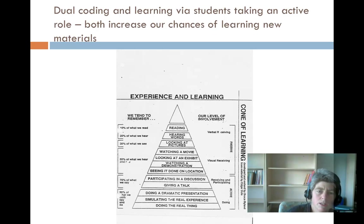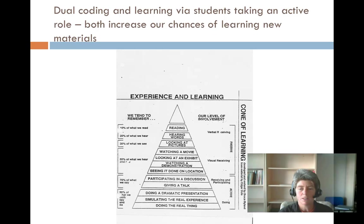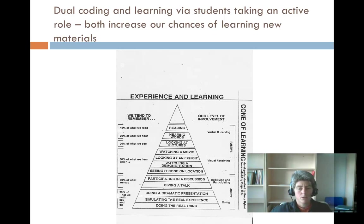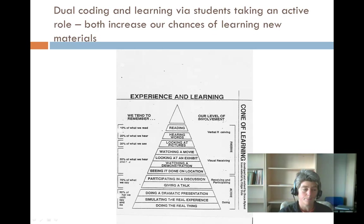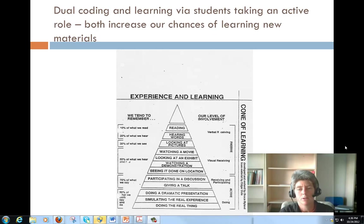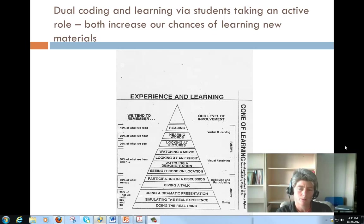You read about dual coding, which means you have two systems in your memory — one for verbal memory and one for storing images. Looking at this triangle, some people say you remember about 10% of what you read, 20% of what you hear, and possibly 30% of what you see. As you move down the triangle, the more active the learning gets, the greater the chance of retaining it in memory — whether you taught it, gave a talk, did a dramatic presentation, or actually did the real thing. In the most ideal setting we do the real thing, but sometimes classrooms are more limited and we're working toward a more active role for students.